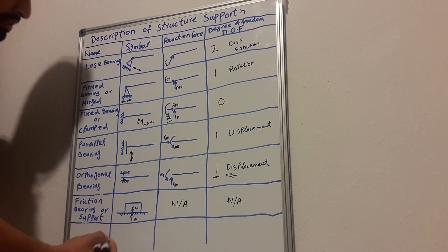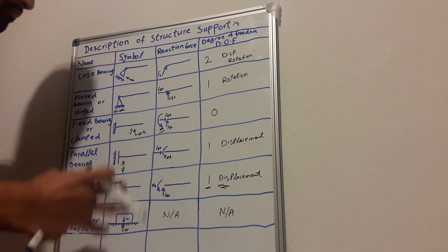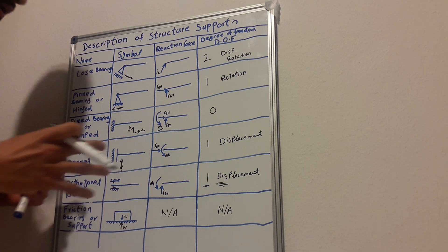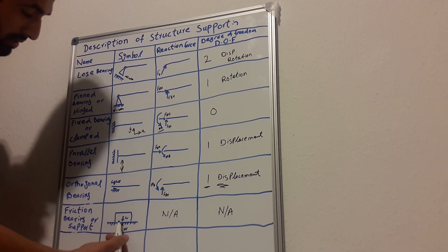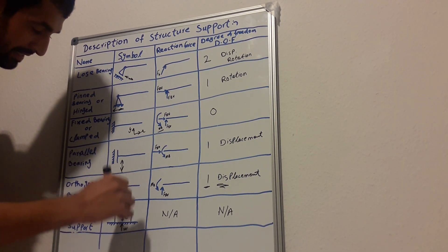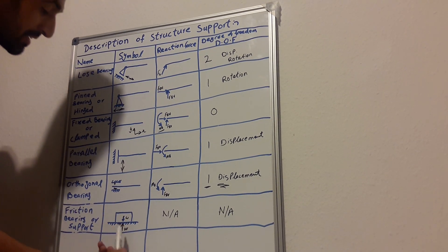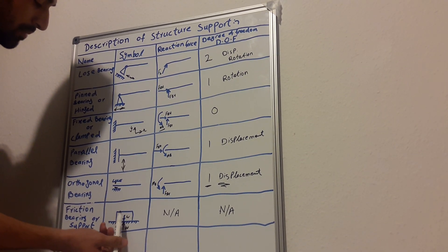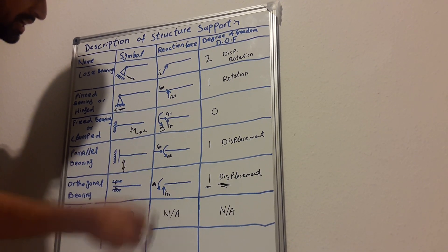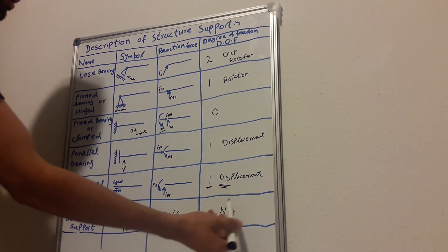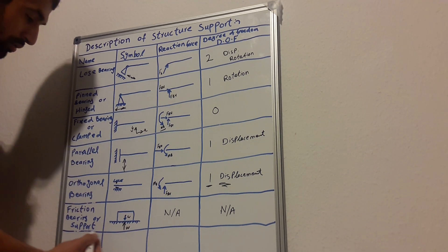The final one is a friction bearing. Basically, you have a flat surface area and a body — maybe a mass or a box of wood — placed on the ground. The mass of that body acts downward, and the surface — which can be ground, a table, or anything — resists the body upward. This is where action and reaction occur. In this support, we don't have any rotation or displacement.